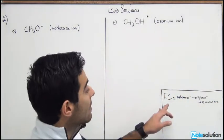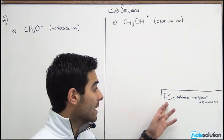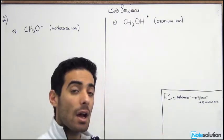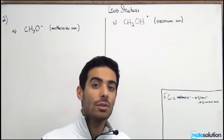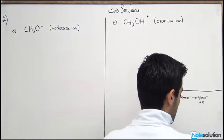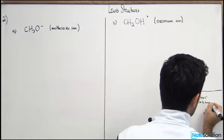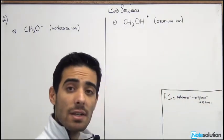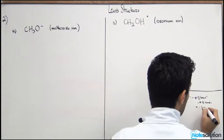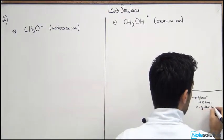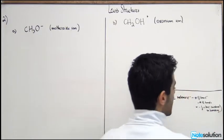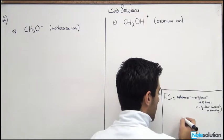Count the number of bonds for the atom you're calculating the formal charge of, and that gives you the bond number. Sometimes atoms might have double or triple bonds. You can write it as minus the number of bonds, or as minus half times the number of electrons involved in bonding.